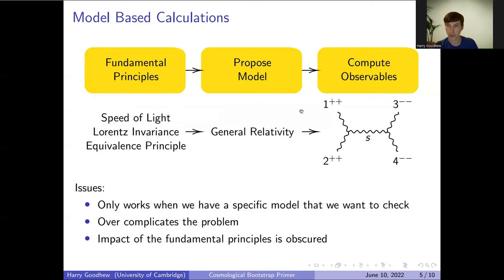Historically there have been two main methods. The first is to start with some fundamental principles, use them to construct a model, and then perform some calculations and compute observables. Perhaps the most famous example of this is Einstein, who started with the principle that the speed of light should be constant and physics should be Lorentz invariant, and used those two principles to construct special relativity. Then from there, he combined that with the equivalence principle to give us general relativity.